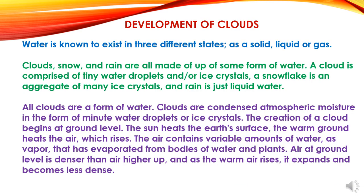Now we will study the development of clouds. Water is known to exist in three different states: as a solid, liquid, or gas. Clouds, snow, and rain are all made up of some form of water. A cloud is comprised of tiny water droplets or ice crystals. A snowflake is an aggregate of many ice crystals, and rain is just liquid water. All clouds are a form of water — clouds are condensed atmospheric moisture in the form of minute water droplets or ice crystals.